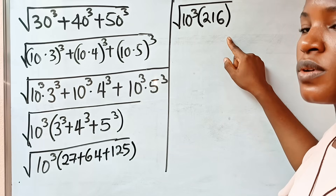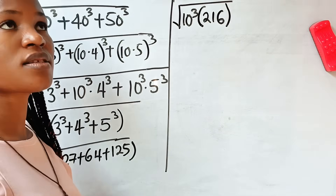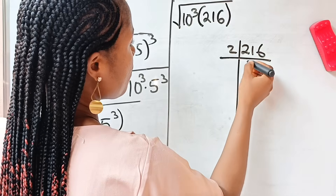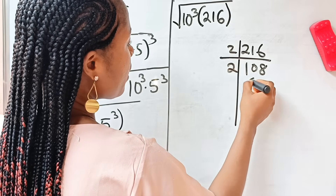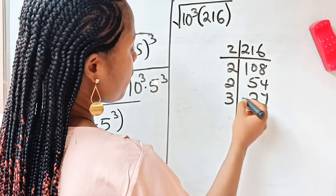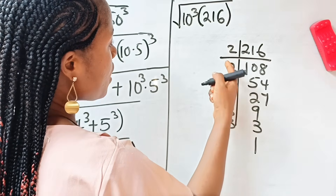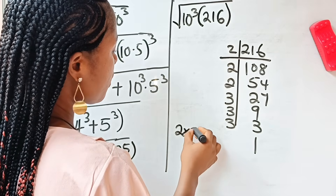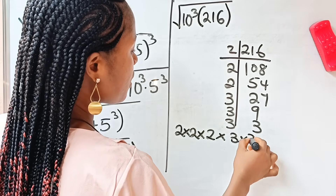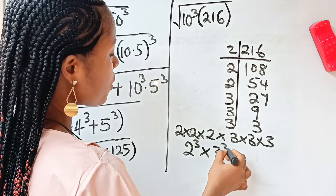Now let's simplify 216. We don't have a calculator, so we factorize it. The smallest factor of 216 is 2, giving us 108. Divide by 2 again to give us 54. Divide by 2 to give us 27. Divide by 3 to give us 9. Divide by 3 to give us 3. Divide by 3 to give us 1. So we notice that we have 2 times 2 times 2 times 3 times 3 times 3, which is 2 to the power of 3 multiplied by 3 to the power of 3.